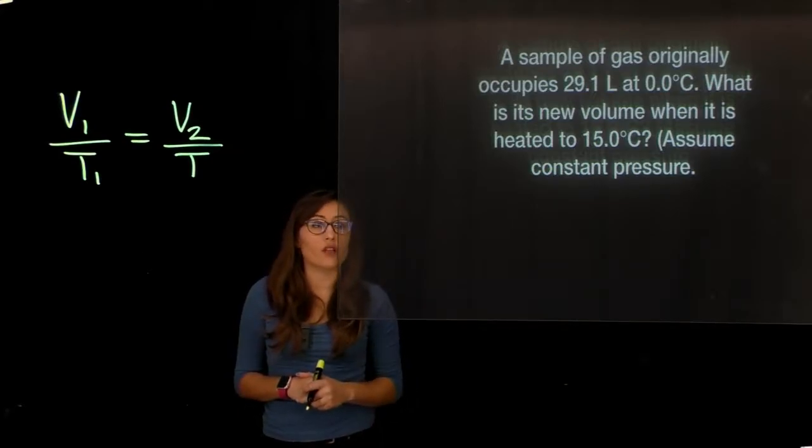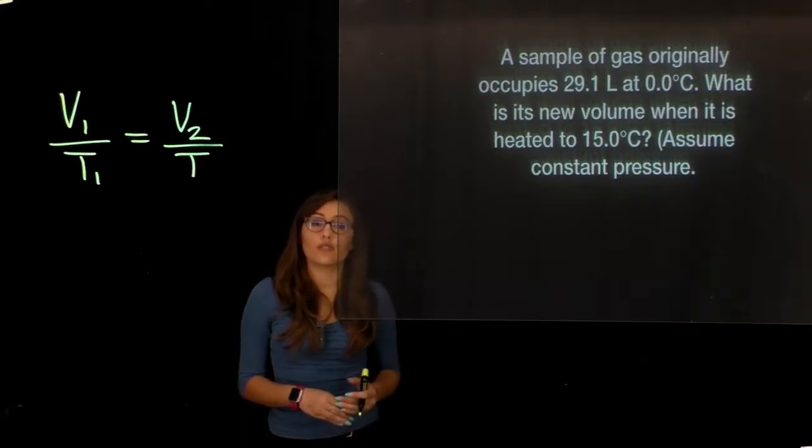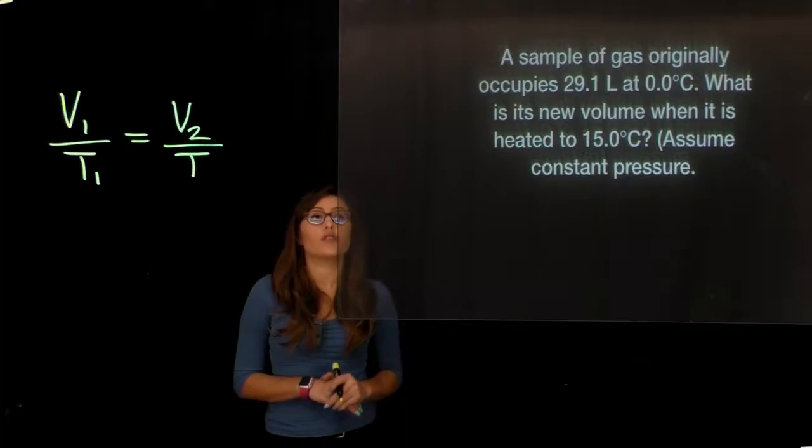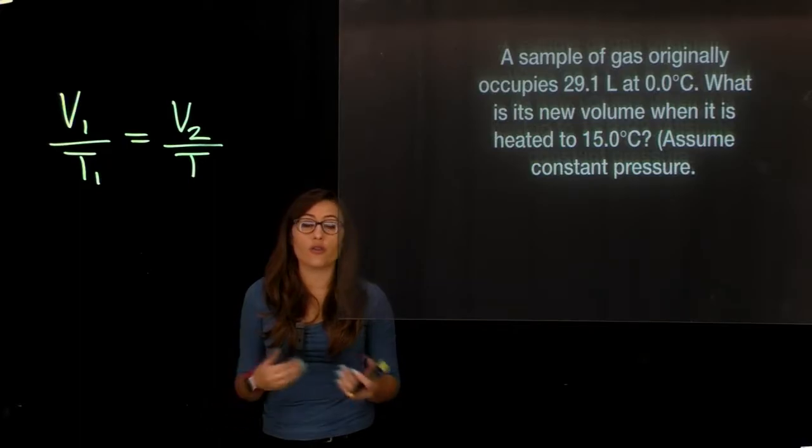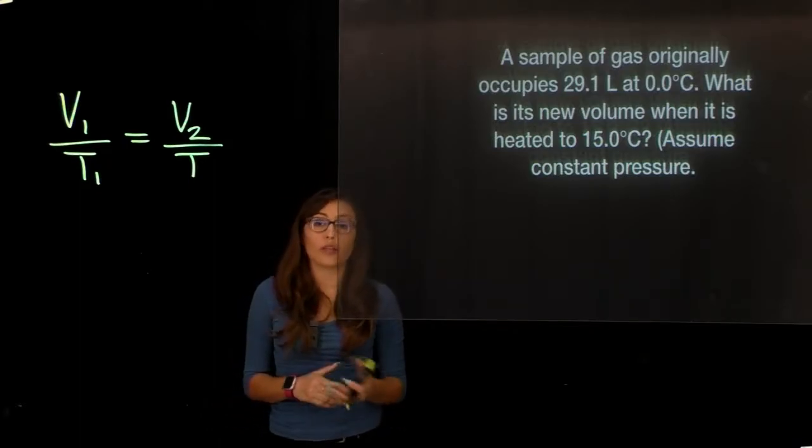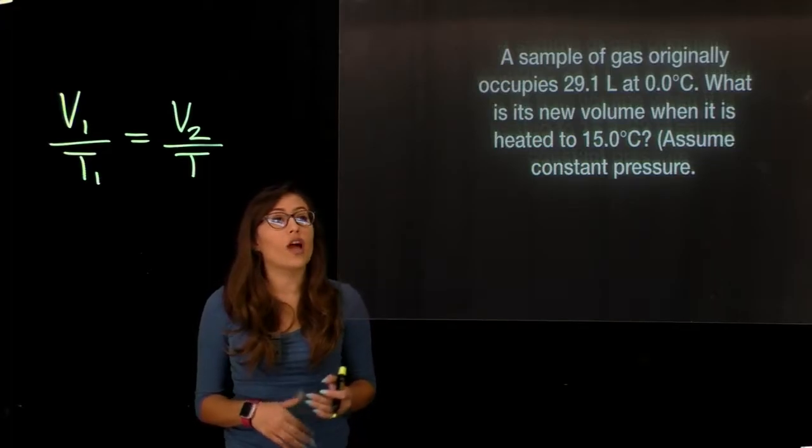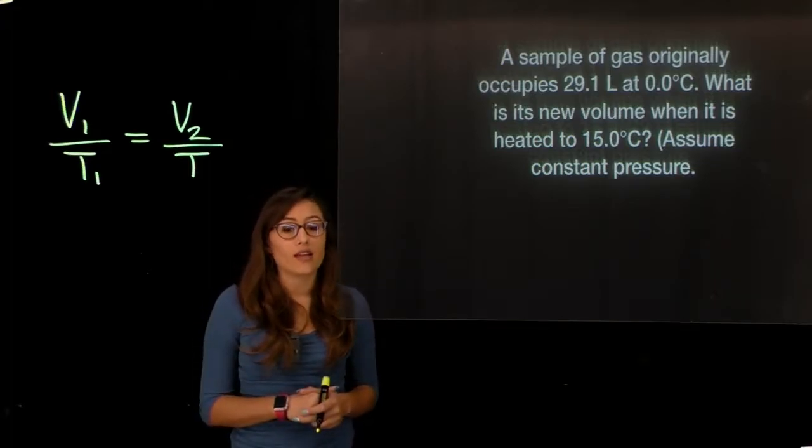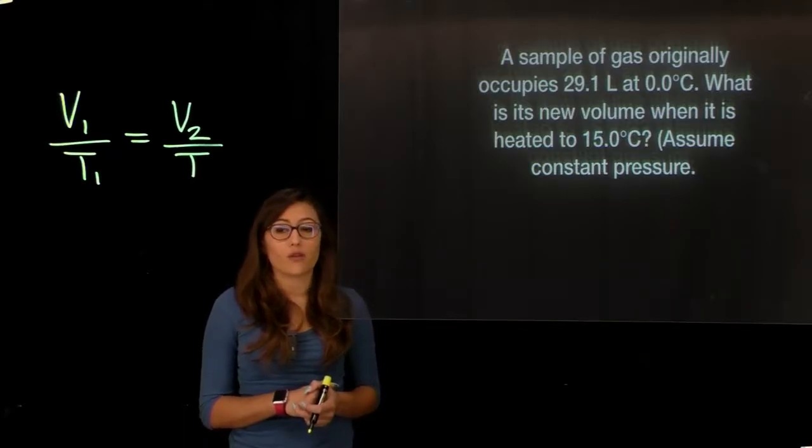So this is another Charles' Law problem. We're looking at increasing our temperature from 0 degrees Celsius to 15.0 degrees Celsius. So we know that with Charles' Law, it shows a direct relationship between volume and temperature. They're directly proportional to one another. So as we increase one, the other one must increase in response to that. In this problem, we're looking for an increase in volume because we're increasing that temperature.